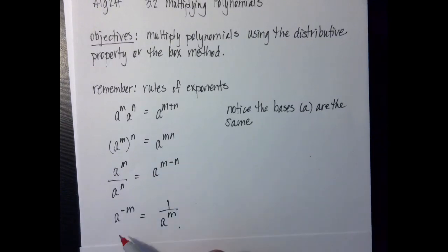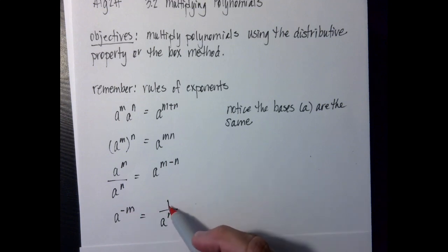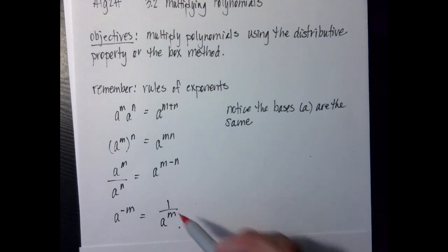And then the last rule is if I have a to the negative m, then that means it's going to be 1 over a to the m.